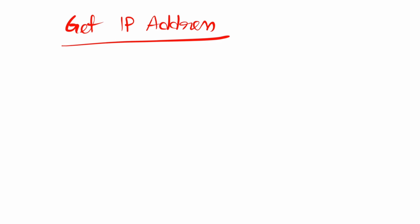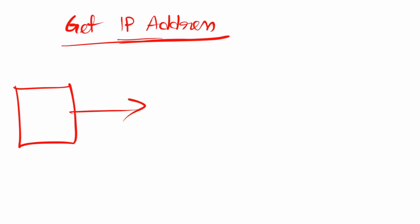In this video we will see how to create a simple Java application to get the IP address. We'll create a Java class and inside this class we'll build our own logic to get the IP address. After running this program it will show us the IP address of our computer or network. To do this we need to create a class.